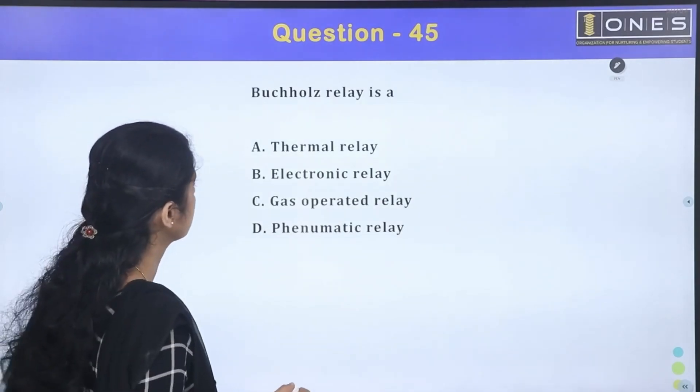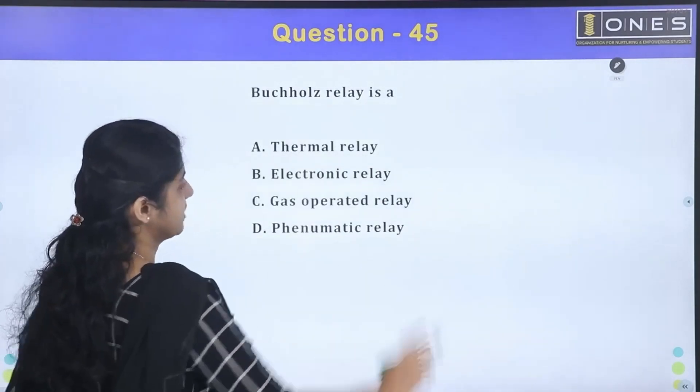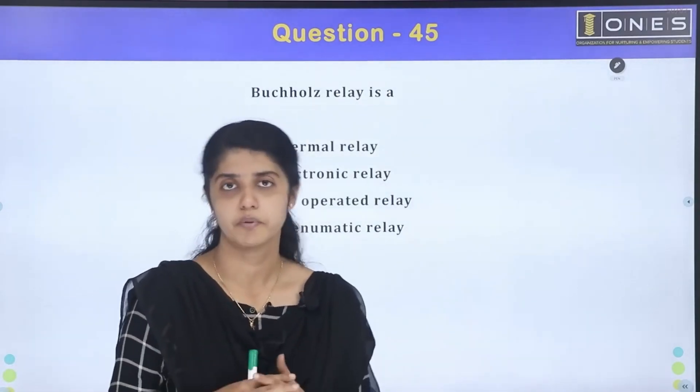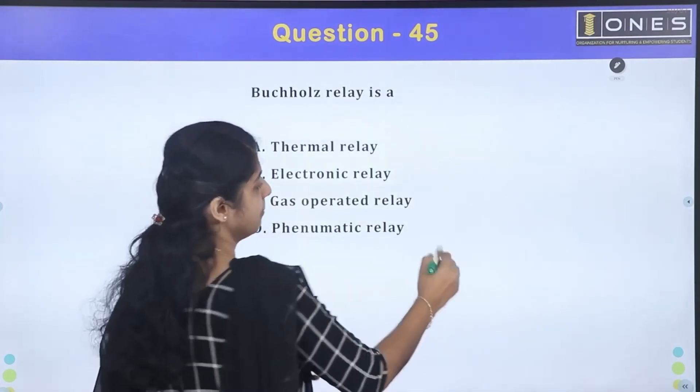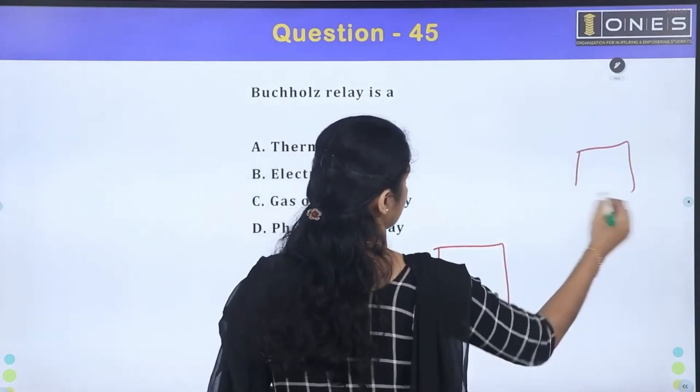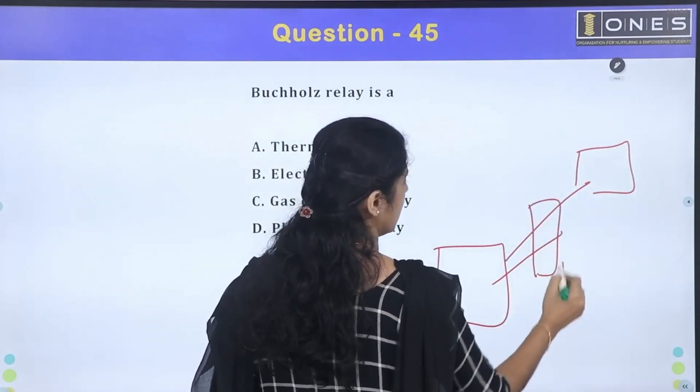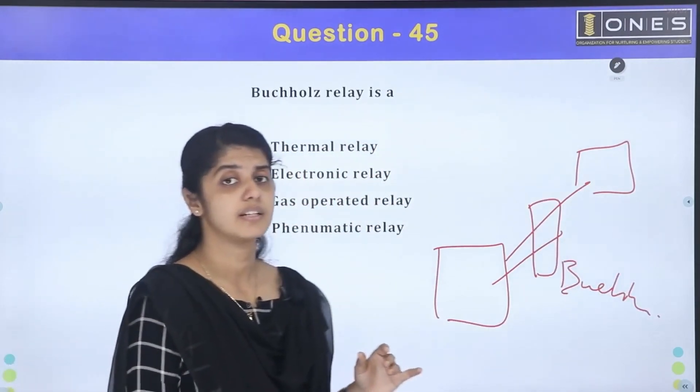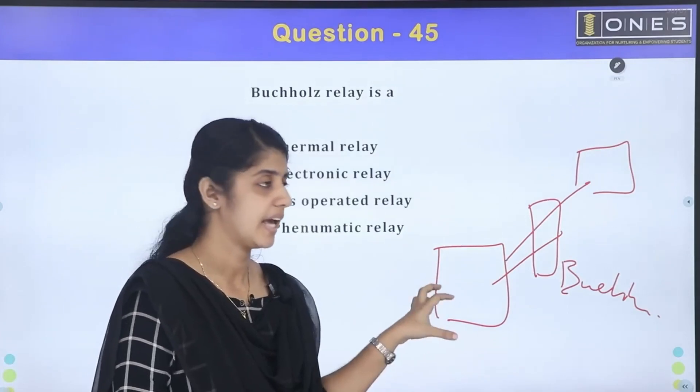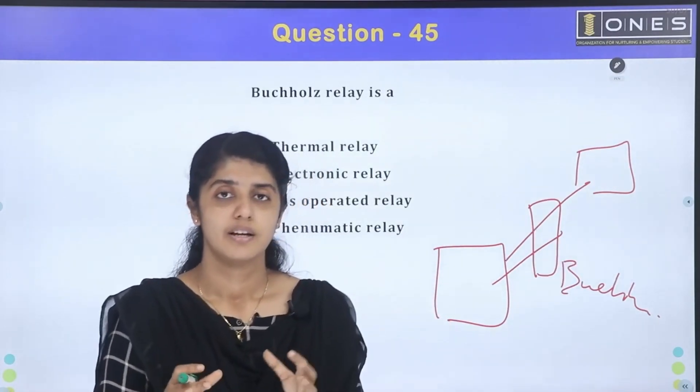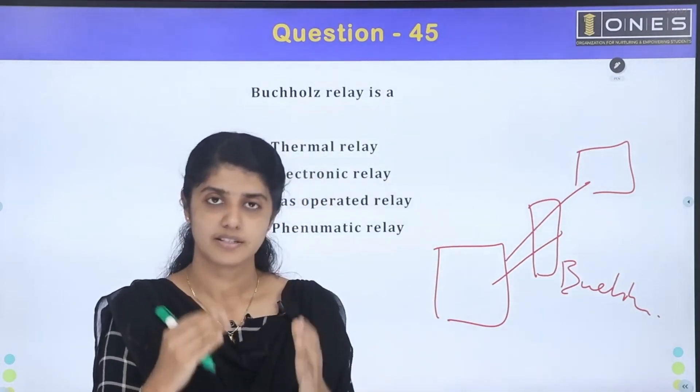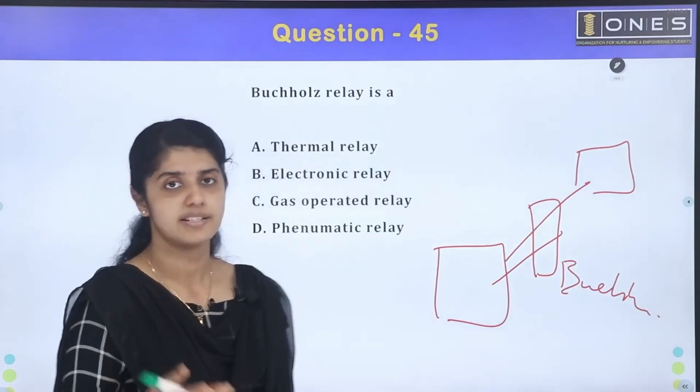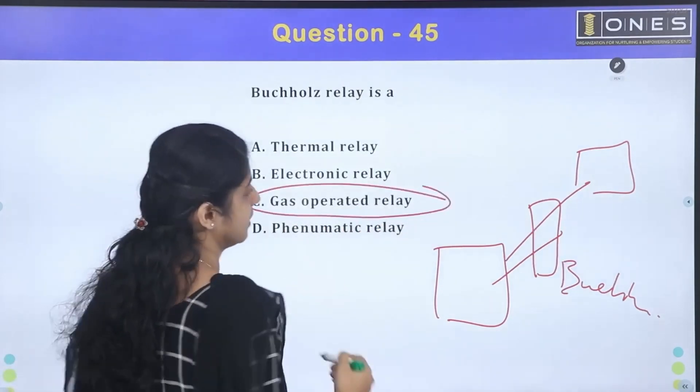Next question: Buchholz relay is a - thermal relay, electronic relay, gas operated relay, pneumatic relay. What? Buchholz relay application? It is a transformer protection. It is a main tank. The main tank is a conservator tank. What is this Buchholz relay? When it is an inert, it does not work. It depends on the faulting conditions that come. When it comes to fault conditions, wait for the alarm to come. How does it operate? Name of gas activated. Gas operated.